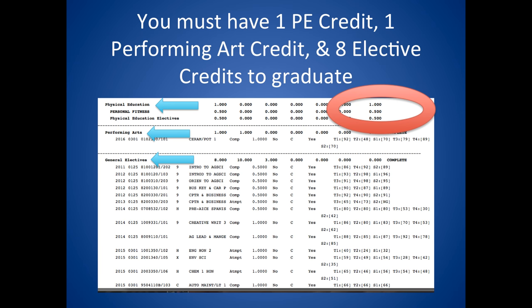Students must complete one credit of PE that must include personal fitness to graduate. They must also complete one performing art credit and finally eight electives to ensure the student reaches 24 credits. Anything beyond the required classes in the buckets becomes an elective — for example, if you take five science classes, only three go into your science bucket and the remaining two become electives. This student has not completed PE, nor is he currently enrolled in any PE classes. Since this student is a senior, this is a red flag that he needs to see his counselor right away to come up with a plan to meet this requirement.